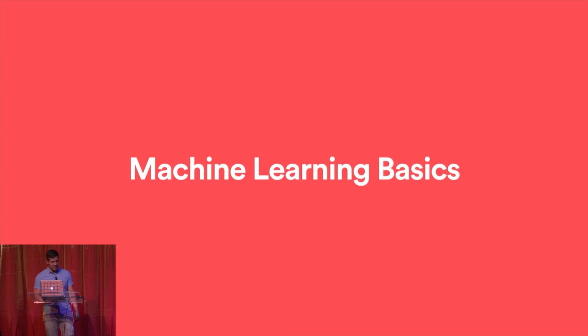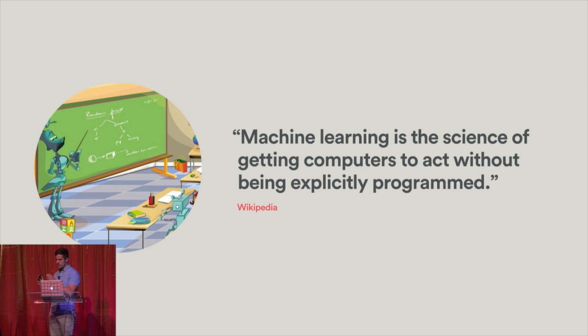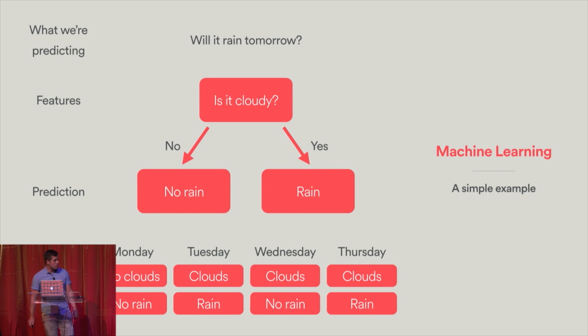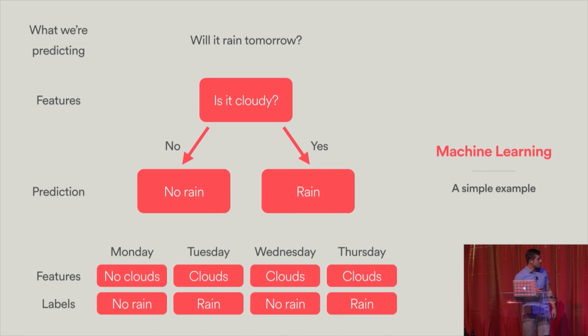So let's talk about machine learning basics. Machine learning is the science of getting computers to act without being explicitly programmed. In practice, that means we take things that have happened in the past and use them to predict things that happen in the future. When you're trying to build a machine learning system, first you need to come up with what you're actually trying to predict — in this case, is it going to rain tomorrow? Features are what you're going to use to decide what your prediction is going to be — in this case, is it cloudy? The prediction is what you think is going to happen. And then you have ground truth, which is the features and the labels from past data — those two things together make ground truth, and they are the critical aspect for building a machine learning system.